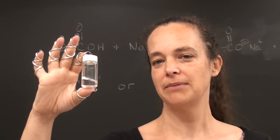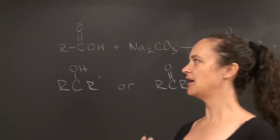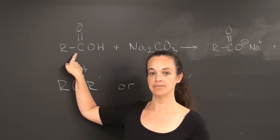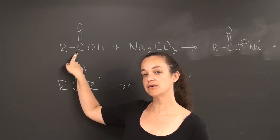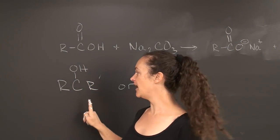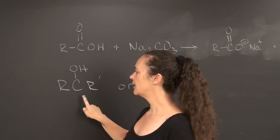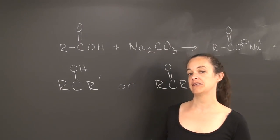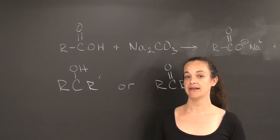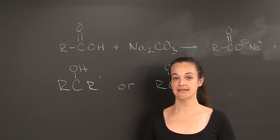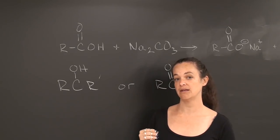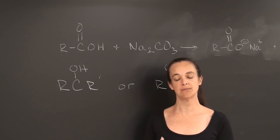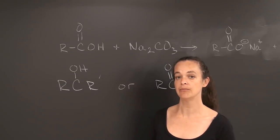Of the two compounds, one of them is going to be a carboxylic acid, and the other one is going to be either an alcohol or a ketone. We are going to use the reactivity of carboxylic acids with sodium carbonate solutions to separate the two from each other.